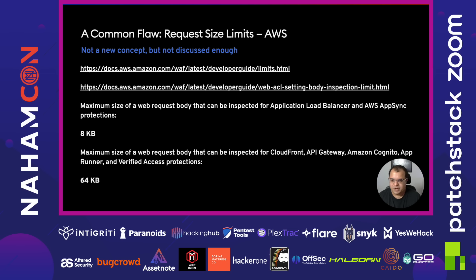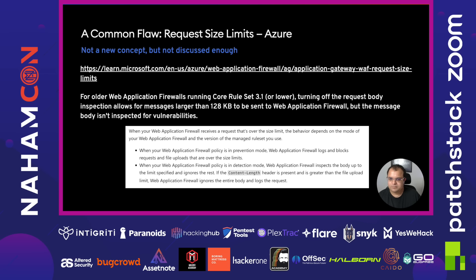For AWS WAF — probably a very popular WAF these days — the documentation is quite clear. The maximum request body size it can inspect is around 8 KB for an Application Load Balancer and AppSync, but it can go up to 64 KB for CloudFront, API Gateway, Cognito, App Runner, and Verified Access protections. In the grand scheme of things, 8 KB or 64 KB is not that large, and in most cases it's possible to just sneak your payload in after the 8 KB or 64 KB boundary without being blocked by the WAF.